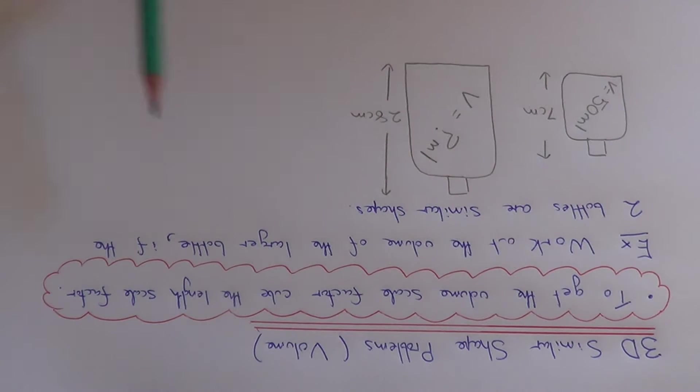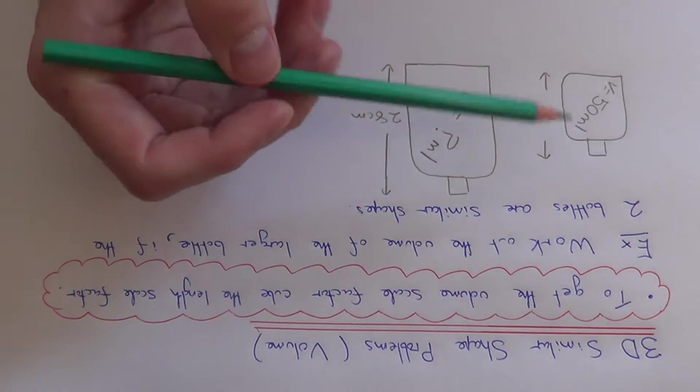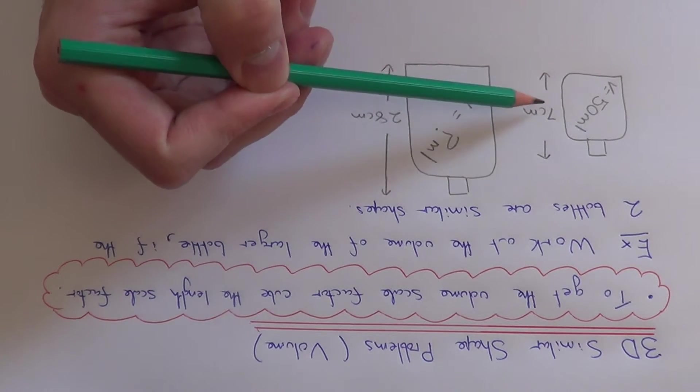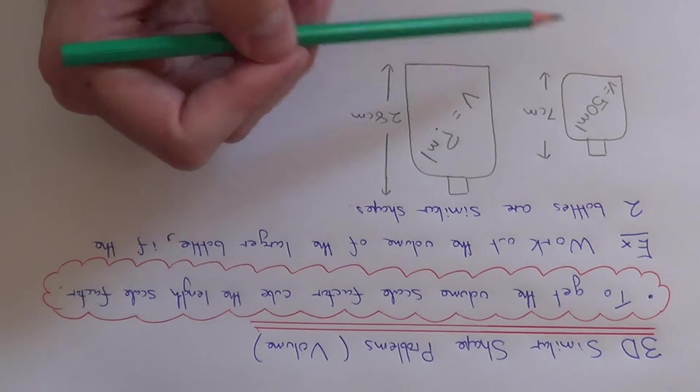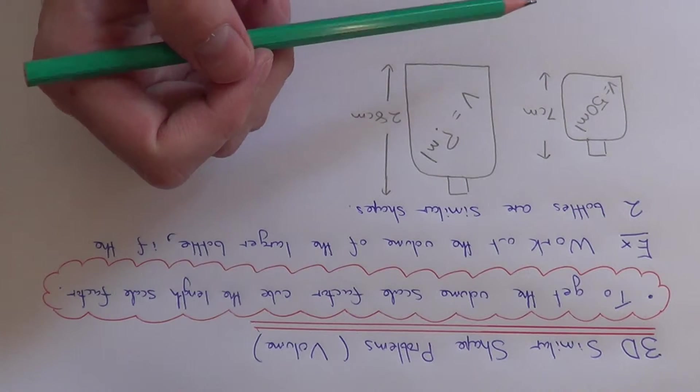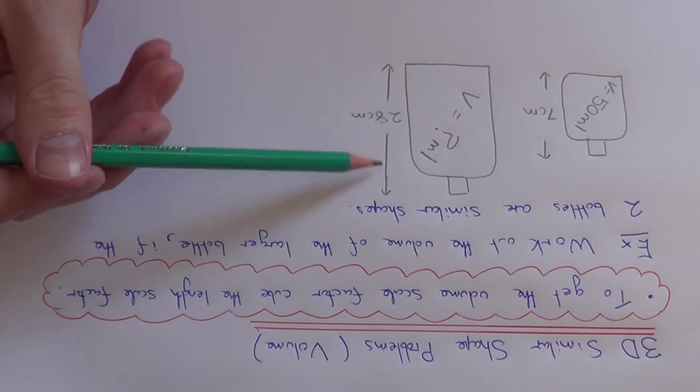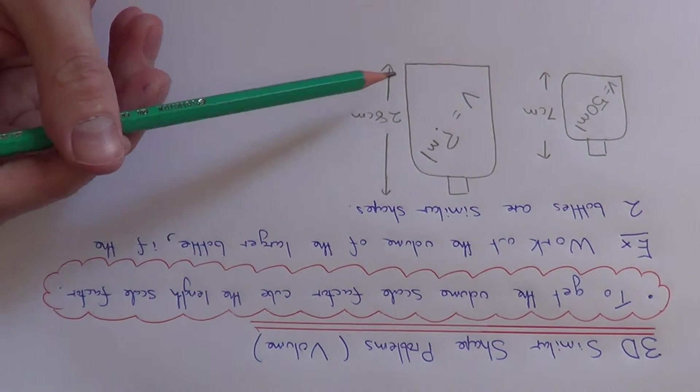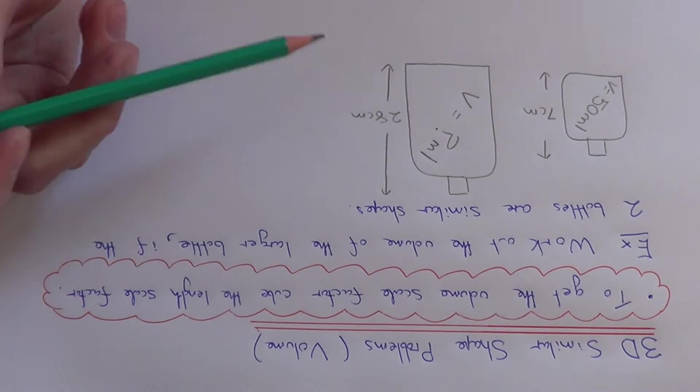So let's have a look at the example which we have here. We've got to work out the volume of the larger bottle if the two bottles are mathematically similar. On the smaller bottle we're given the height which is 7 cm and the volume which is 50 ml. And on the second bottle the height is 28 cm and the volume we need to calculate.